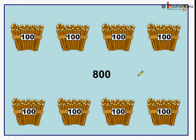Now how many bundles are there of 100? 1, 2, 3, 4, 5, 6, 7, 8. There are 8 bundles of 100 which means we have 800 sticks.